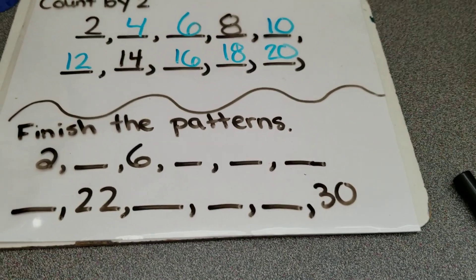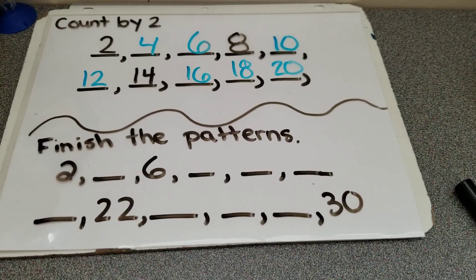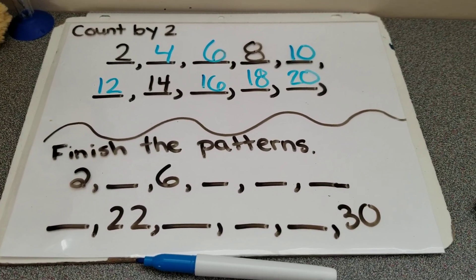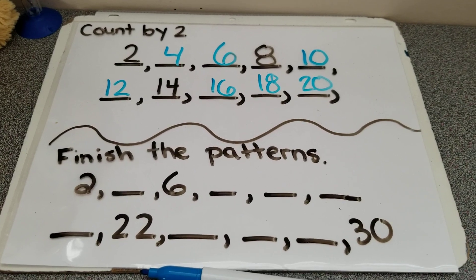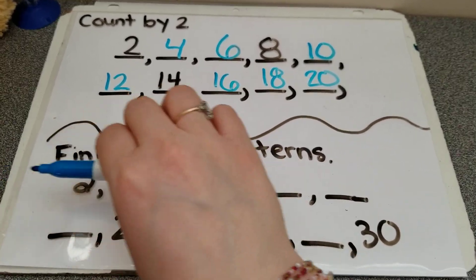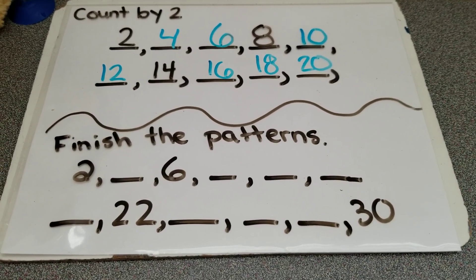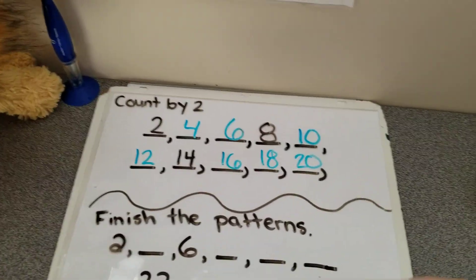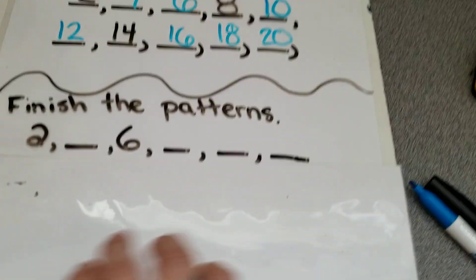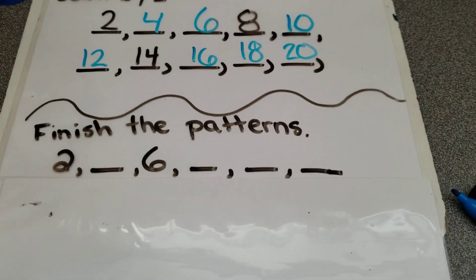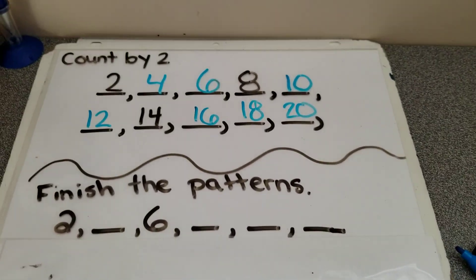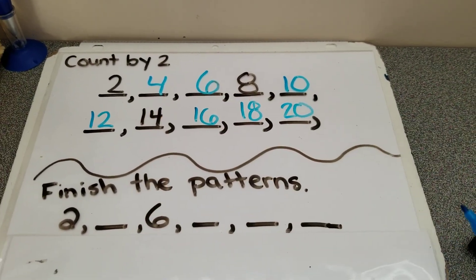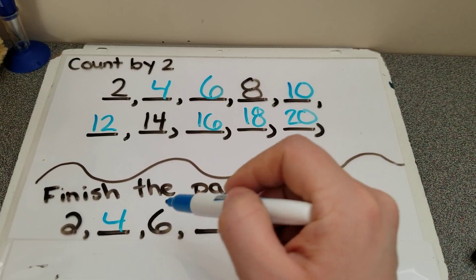So that was fill in the blanks. This one is very similar — it's finish the patterns. Some of us have questions called finish the patterns, but each one of these lines is actually a different pattern. So to start, let's cover up the bottom line and only look at the top line. It says finish the patterns: two, blank, six. We do have something up here that could help us. Two, four, six.